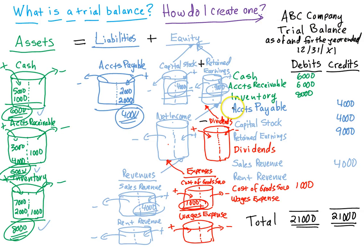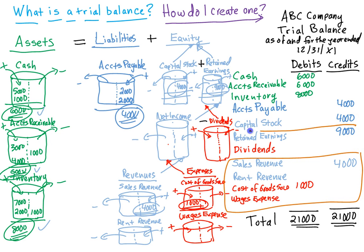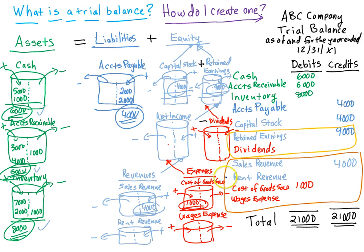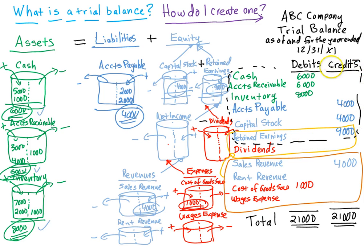You can now use this trial balance to prepare your financial statements. The revenue and expense accounts are used for your income statement. The retained earnings account is used for your statement of retained earnings — and be careful, your net income from the income statement also flows into the statement of retained earnings. Your balance sheet uses the asset and liability accounts plus the ending balance of retained earnings, which will be updated for net income minus dividends — so it won't be the starting $9,000 but a different number.